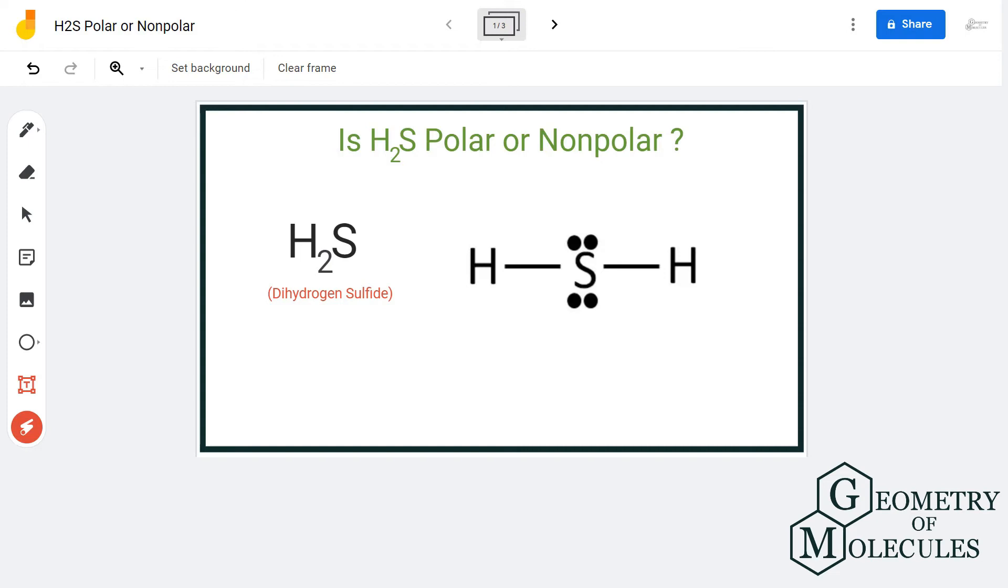Hi guys, in this video we are going to determine the polarity of the H2S molecule, the chemical formula for dihydrogen sulfide. To determine its polarity, we shall first look at its Lewis structure as well as molecular geometry.